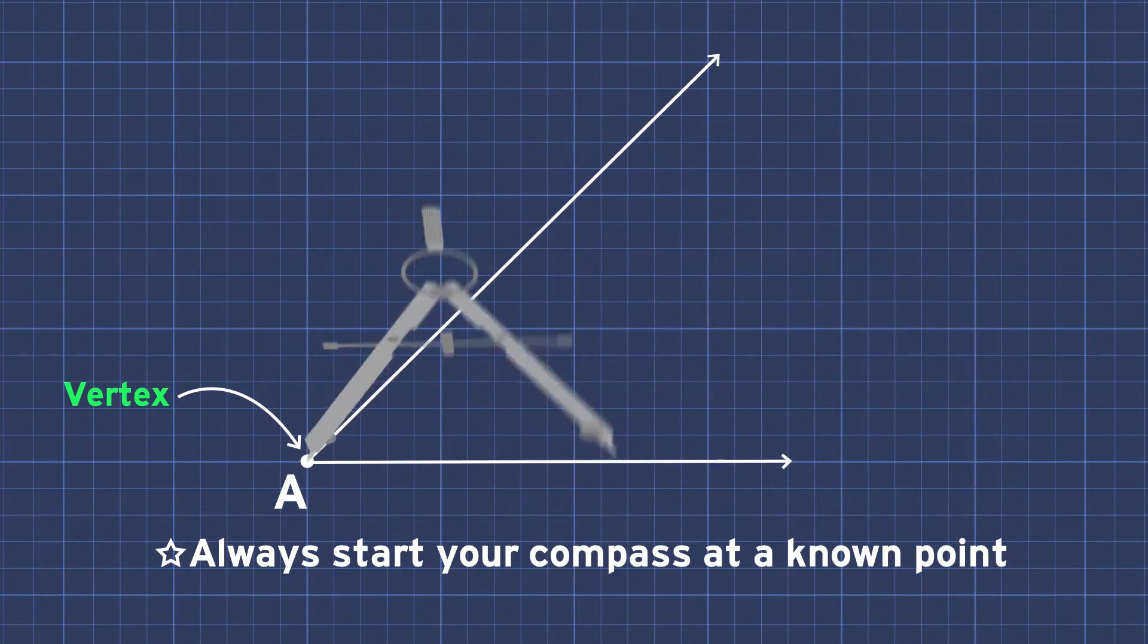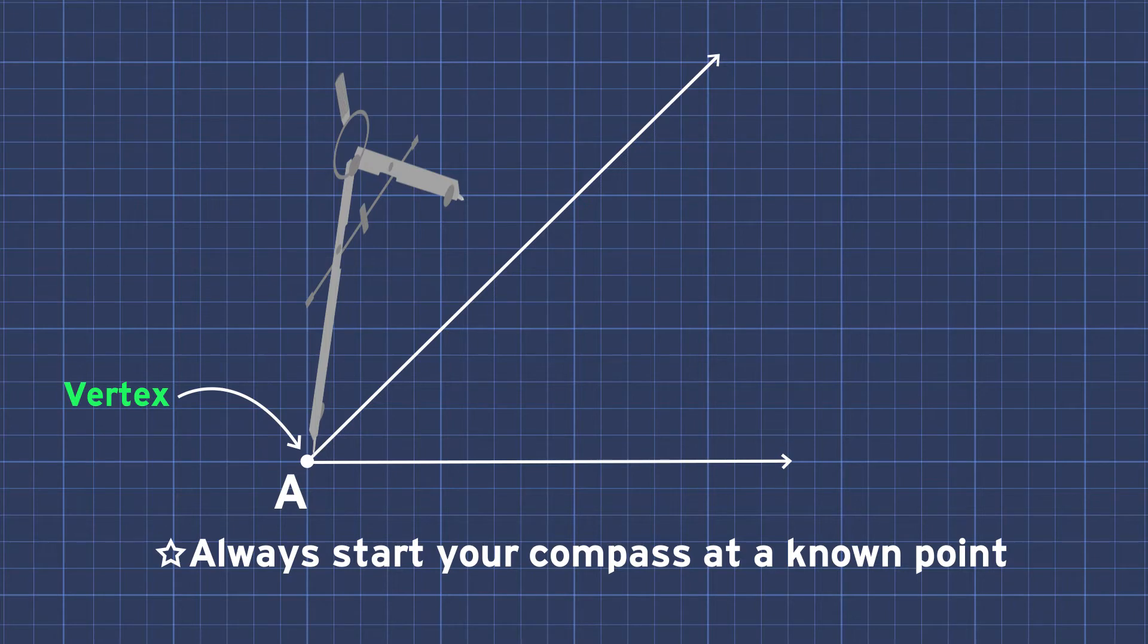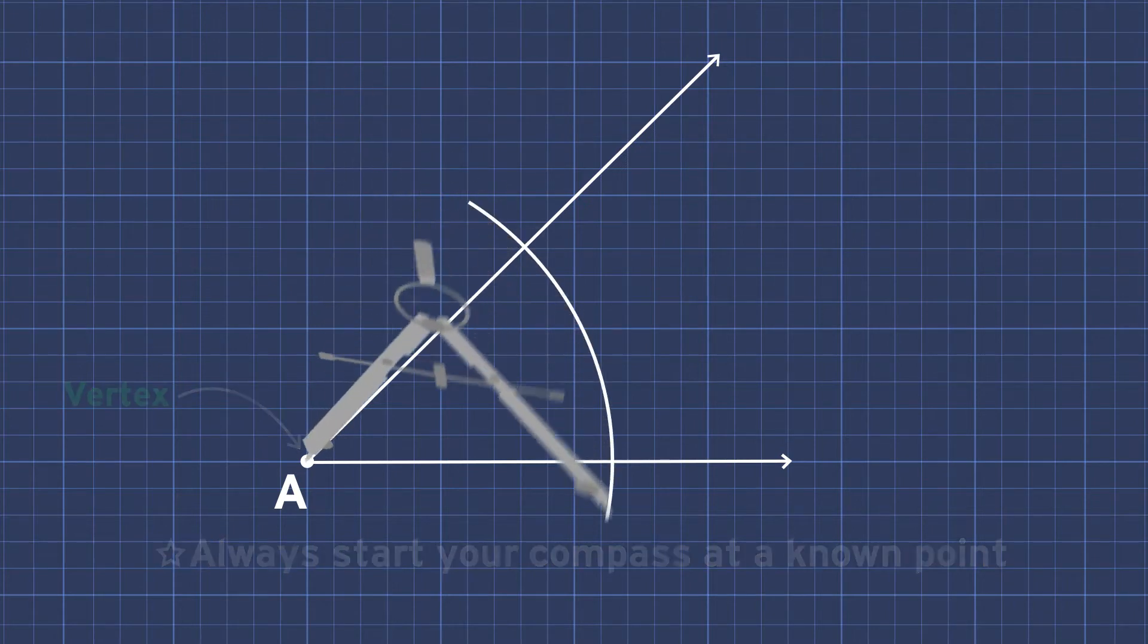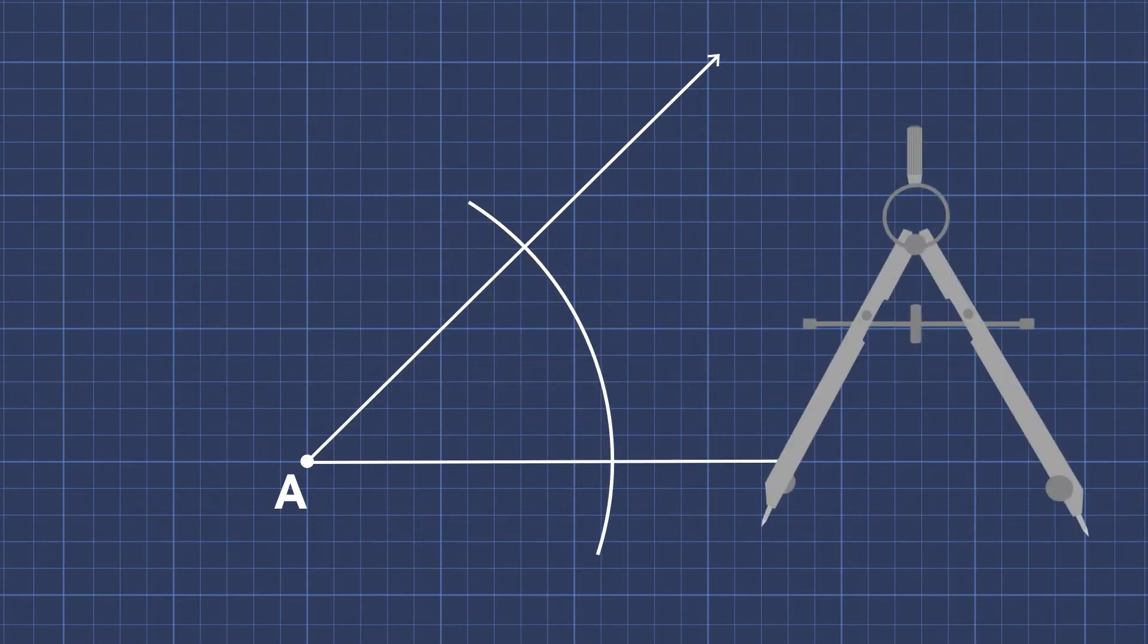Perfect. We draw an arc from point A, and look, it intersects our angle at two points: B and C. Bingo! Now we can call this angle BAC. Because A is the vertex. Exactly.